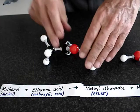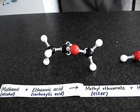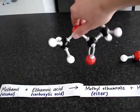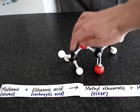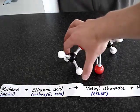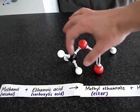And the name of this ester is methyl ethanoate. The reason why it's called that is because we have a methyl group here. One carbon with three hydrogens, CH3, methyl.